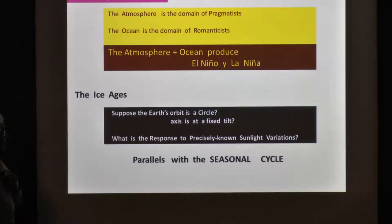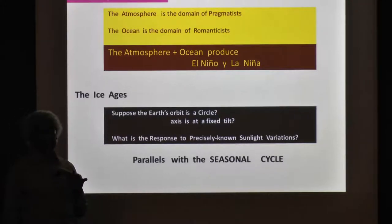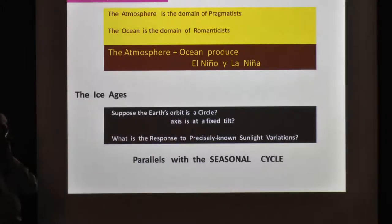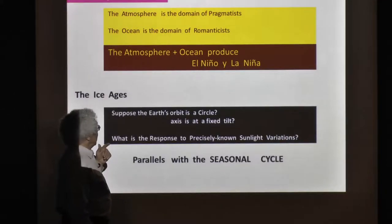That question has become intractable. It involves so many different things. It's not a good question. We have to get around this problem of lack of data and inconsistencies in the data. I will claim that a better question to ask would be: What is the response to precisely known variations in sunlight?